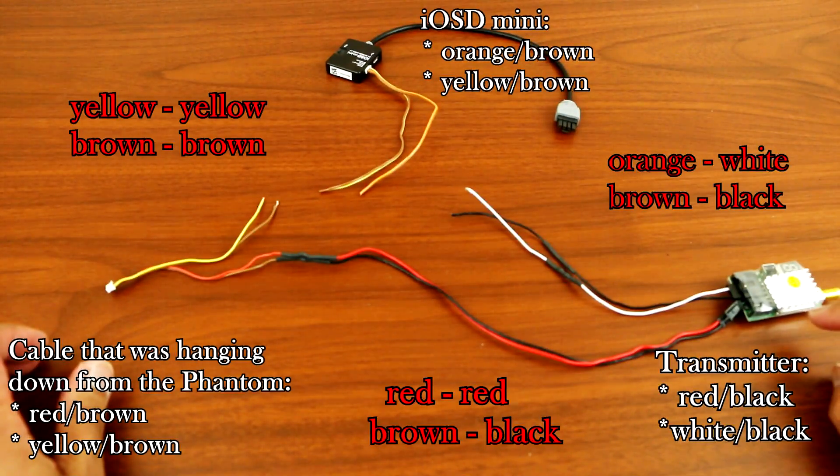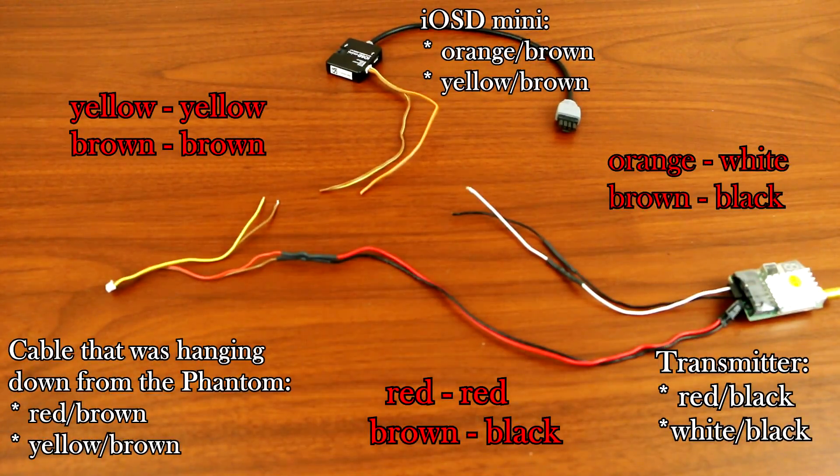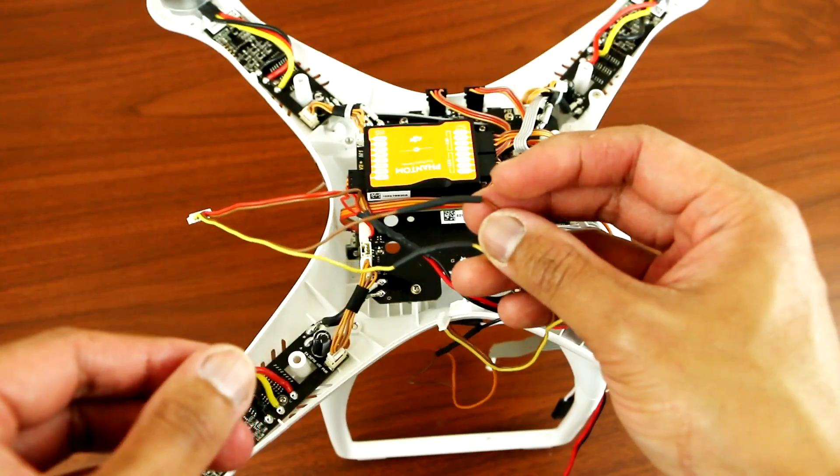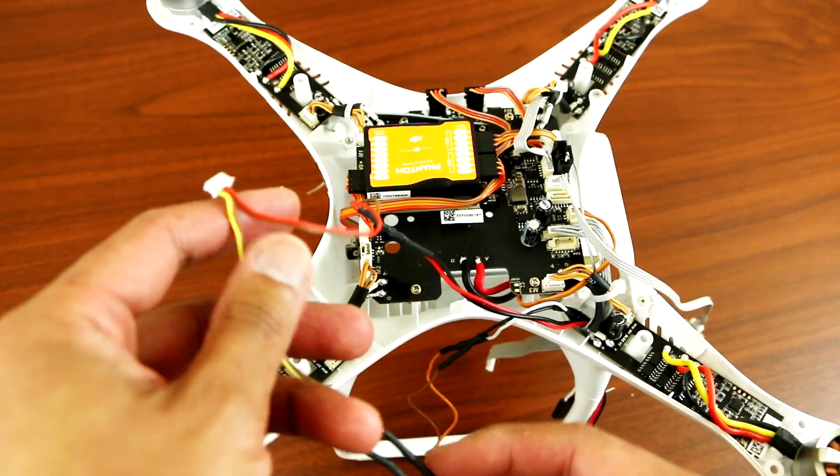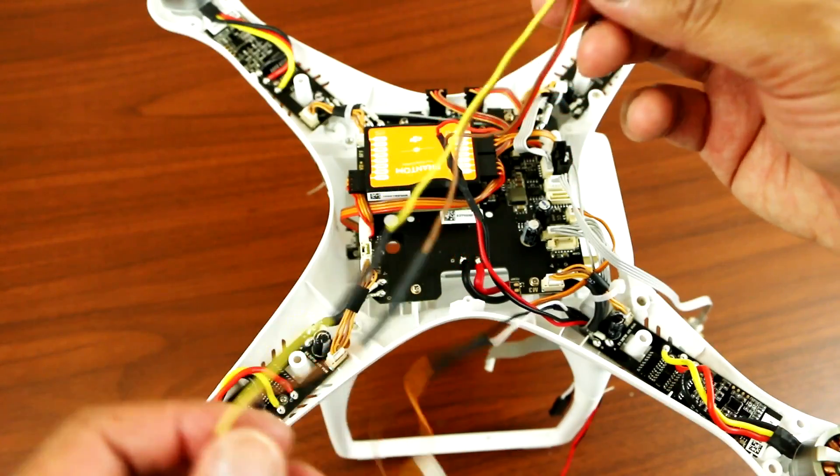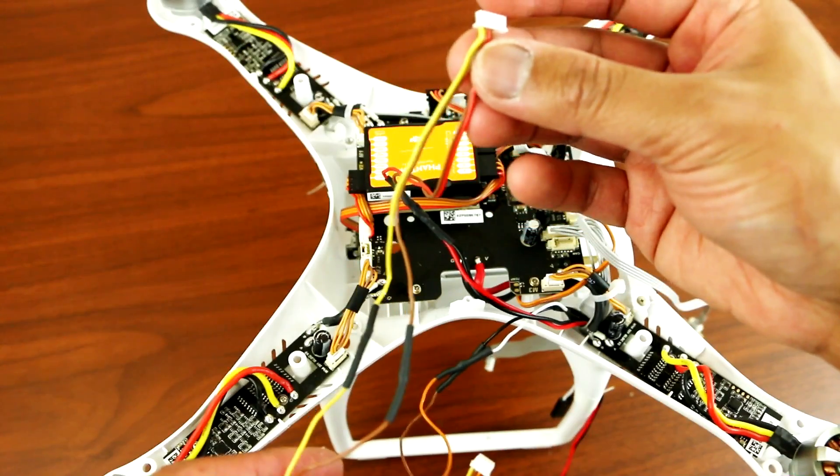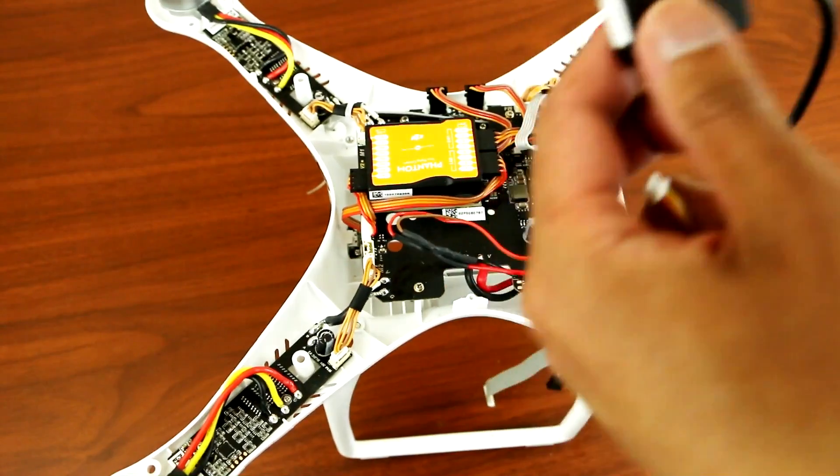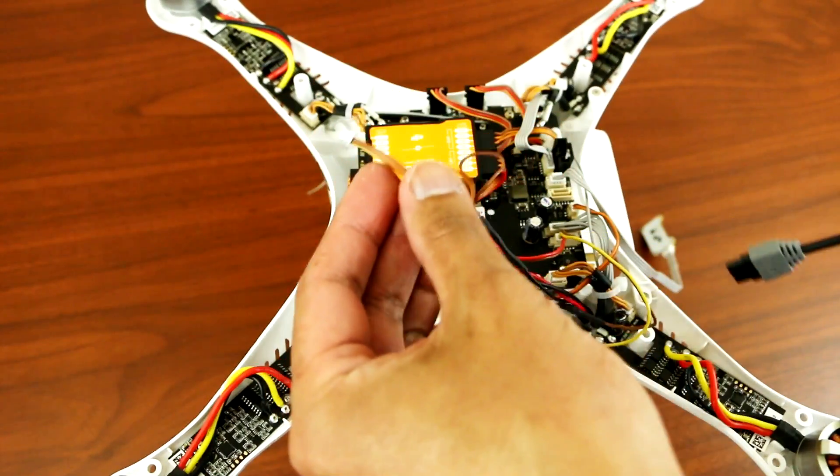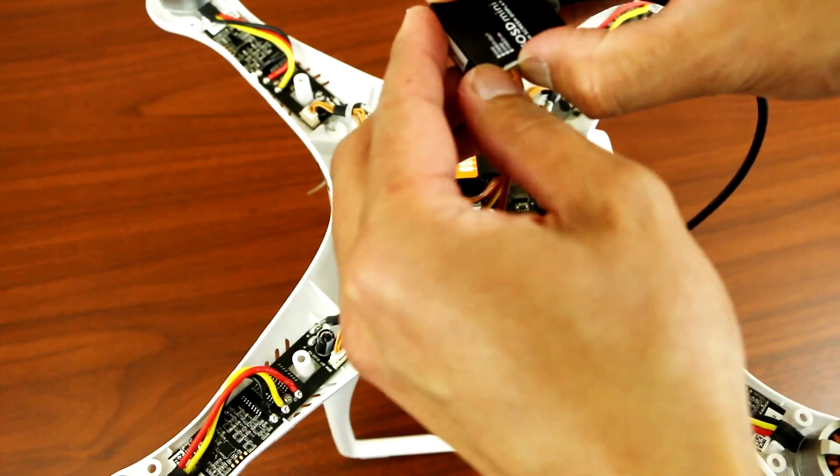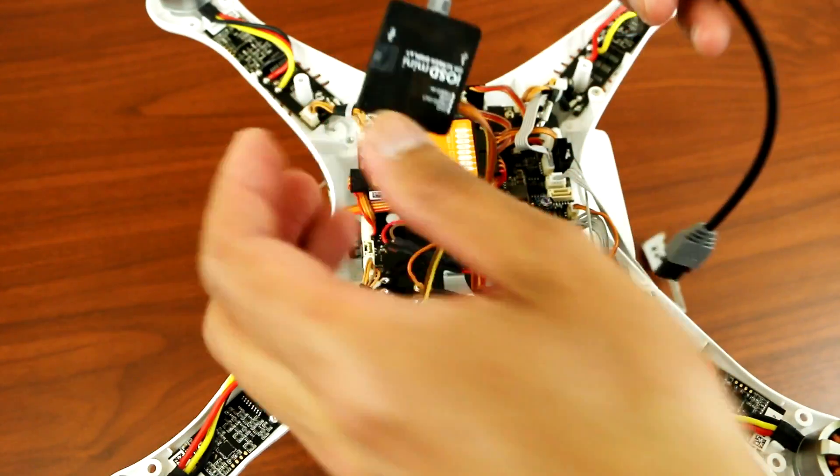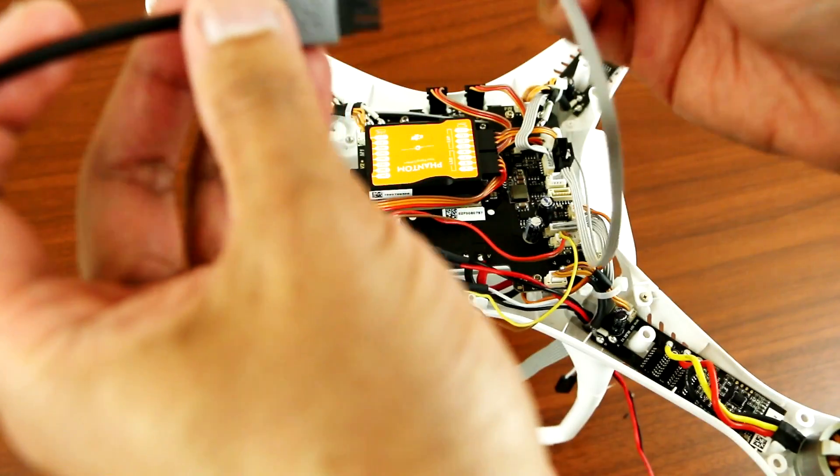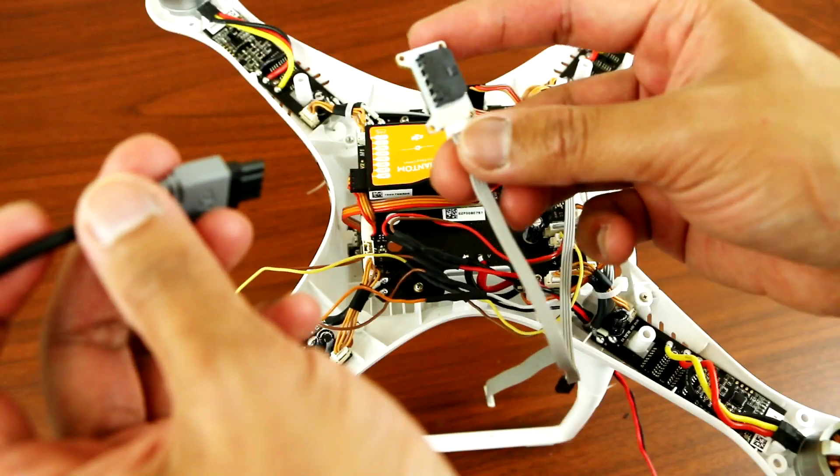Once everything has been soldered and heat shrunk, just plug everything together. This one will be going to the camera slot over here. This is the one that was sticking out on the Phantom. This one will be sticking on the canvas, and the end of the canvas will be connecting to the landing gear.